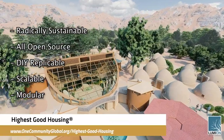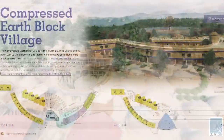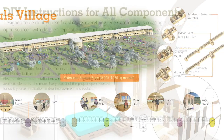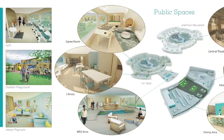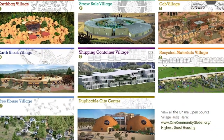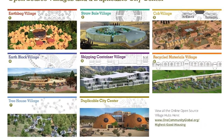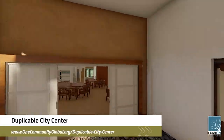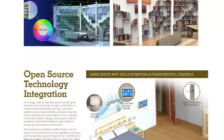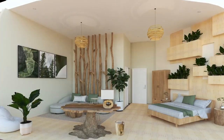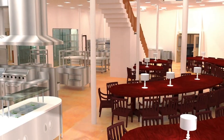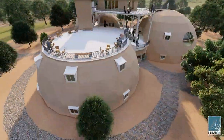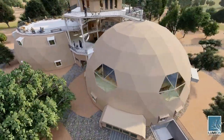The One Community approach to Highest Good Housing is eco-artistic home building that is affordable, sustainable, do-it-yourself duplicable, resource and space efficient, and consists of seven different sustainably constructed village models. One Community is also creating an open-source duplicable city center designed to be LEED Platinum certified, provide 12 guest rooms, dining for over 150 people, and laundry and recreation space for over 300 people — all while saving money, time, space, and resources.